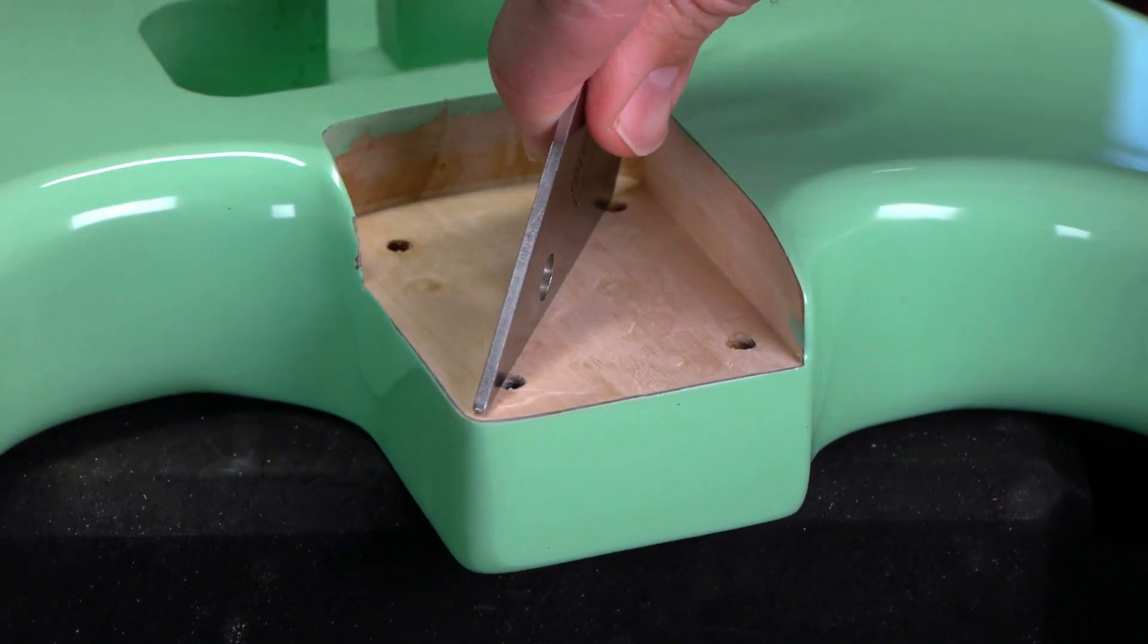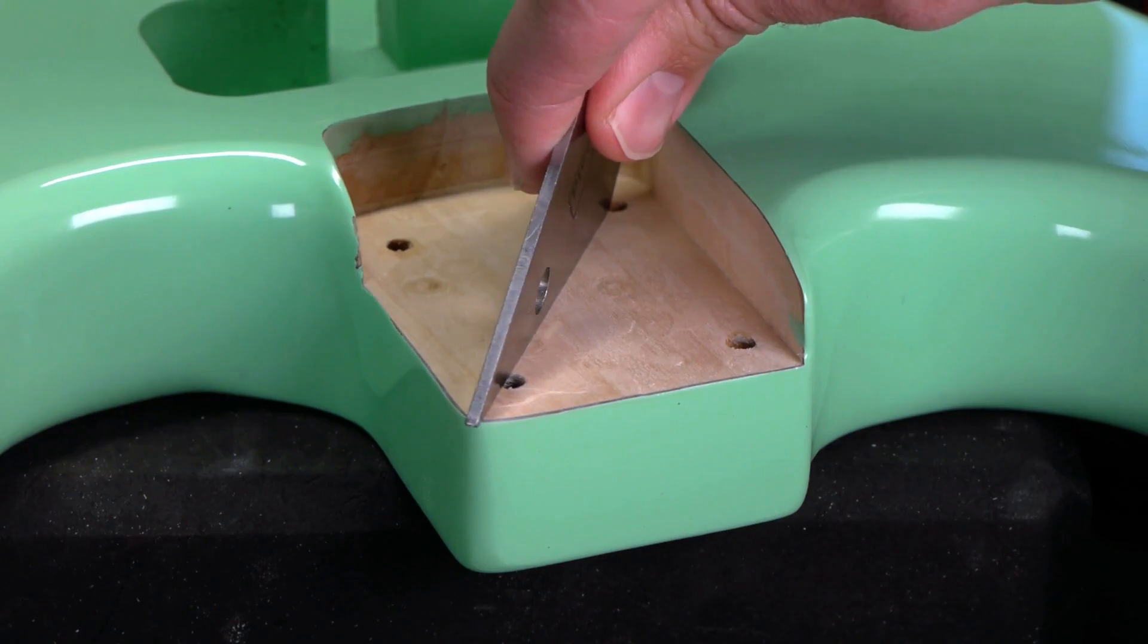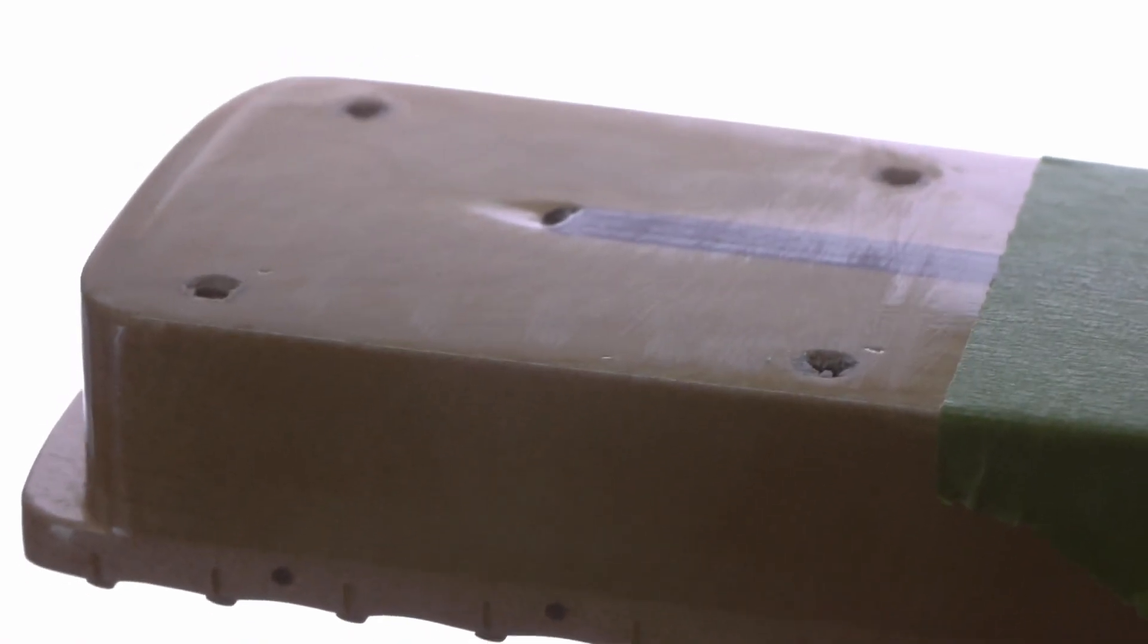The neck pocket looks okay, even though it needs to come down a little more. So why was it uneven? I checked the heel of the neck and found the culprit. The neck heel itself is uneven.